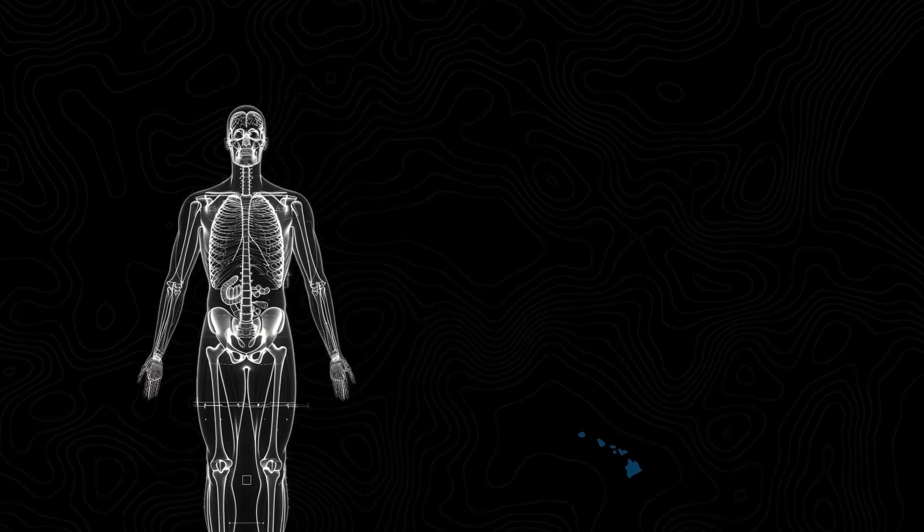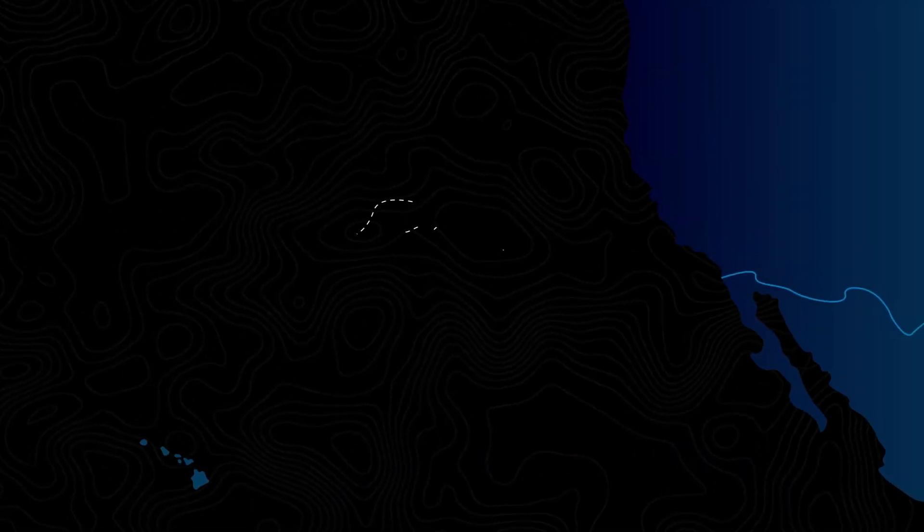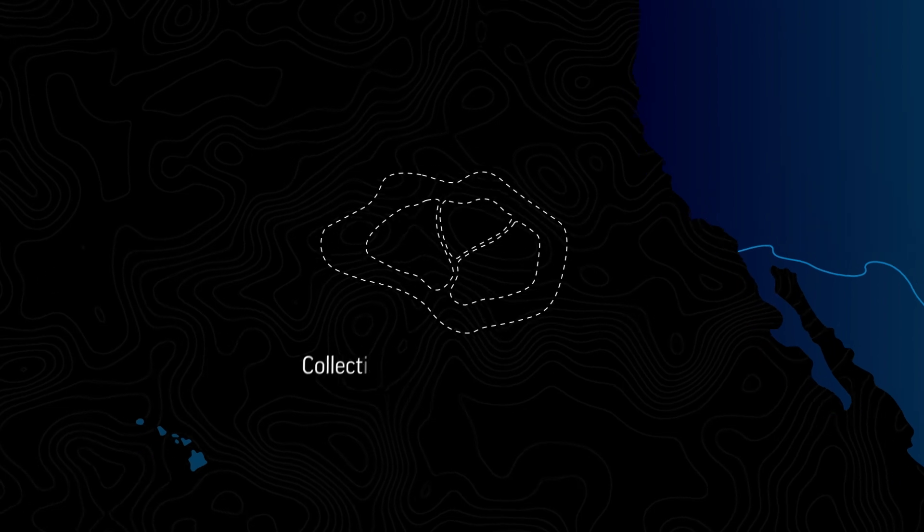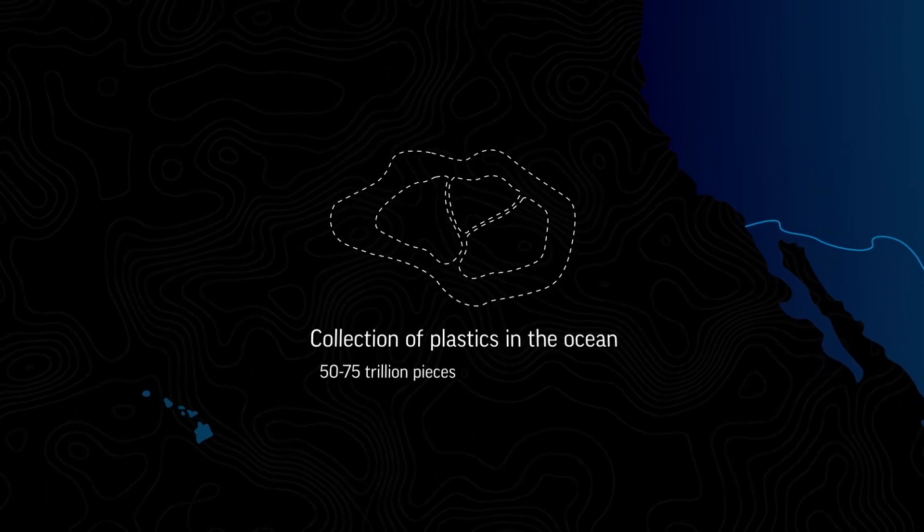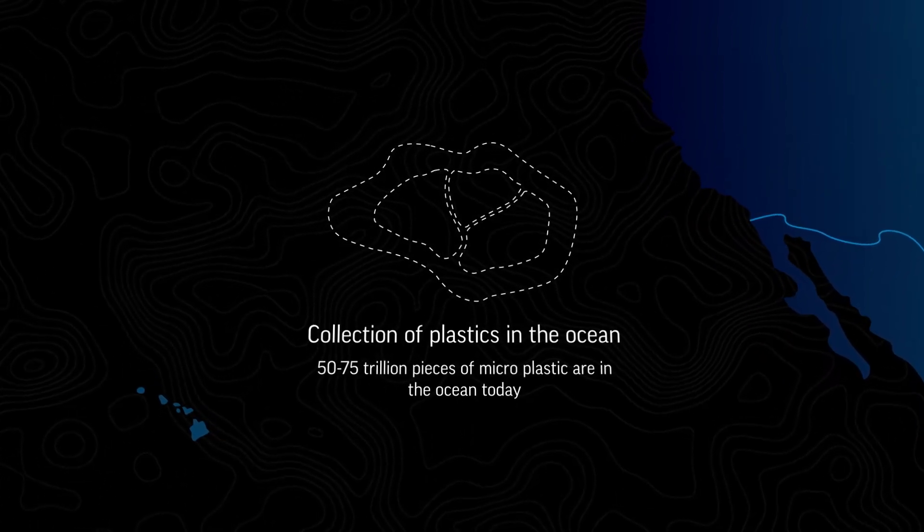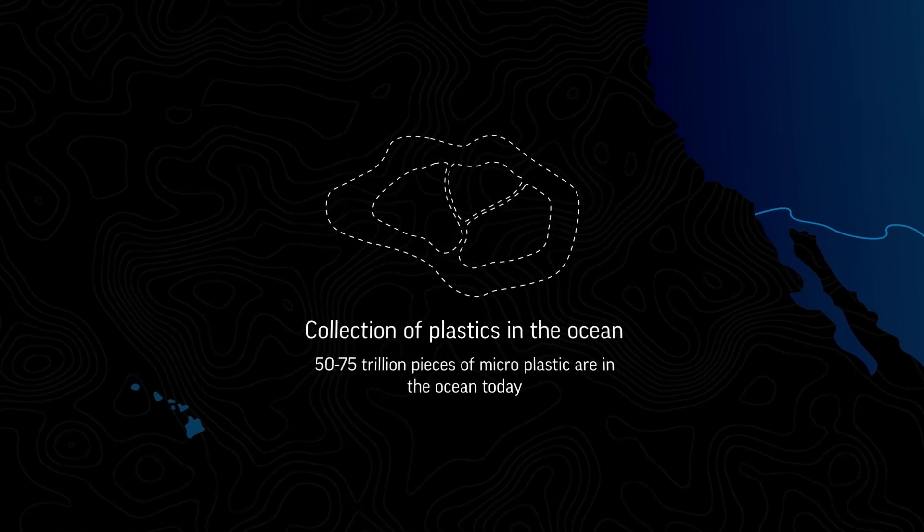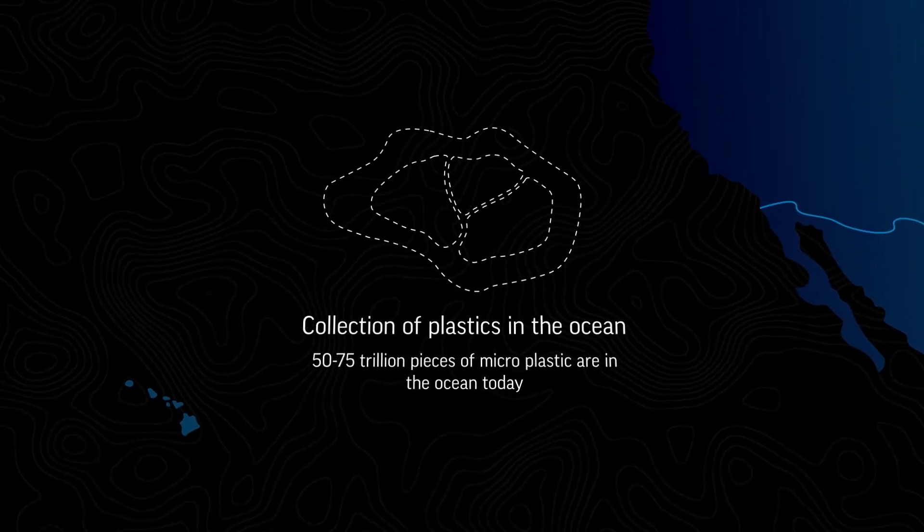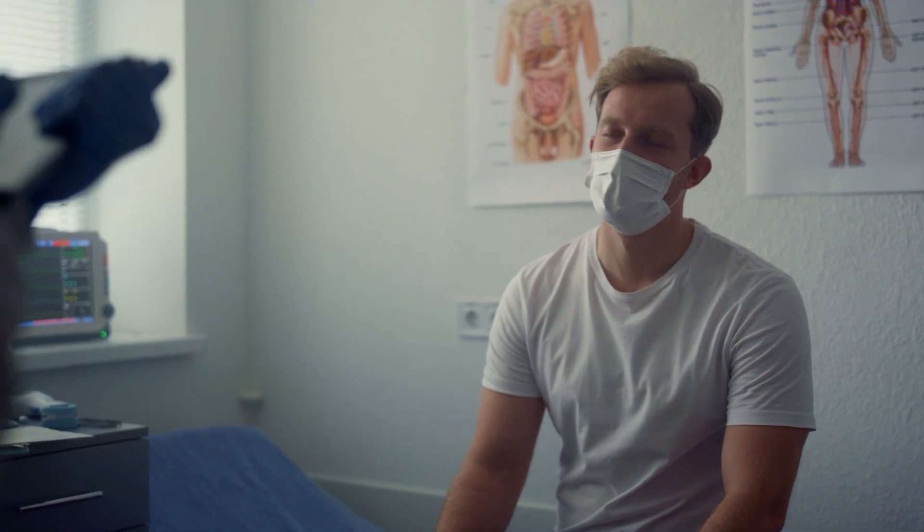And finally, let's zoom out of the human body and travel to the ocean. I'm sure you can guess what that patch is. That's the collection of plastics in the ocean. An estimated 50 to 75 trillion pieces of microplastics are in the ocean today. Microplastics in humans have already been found to heighten stress, cause weight gain, increased risk of cancer, and disrupt reproductive development. But now, because of protein design, we could have a solution.